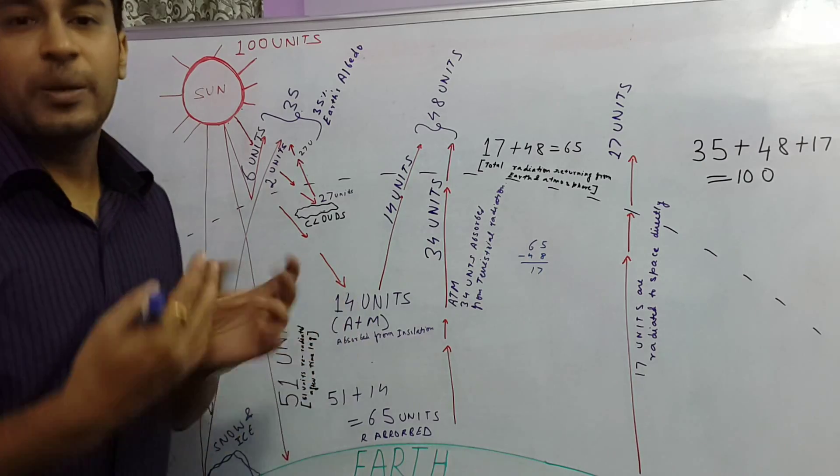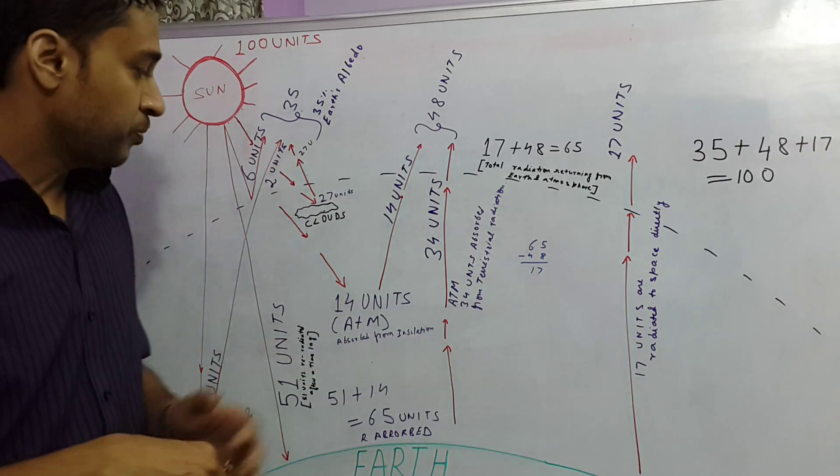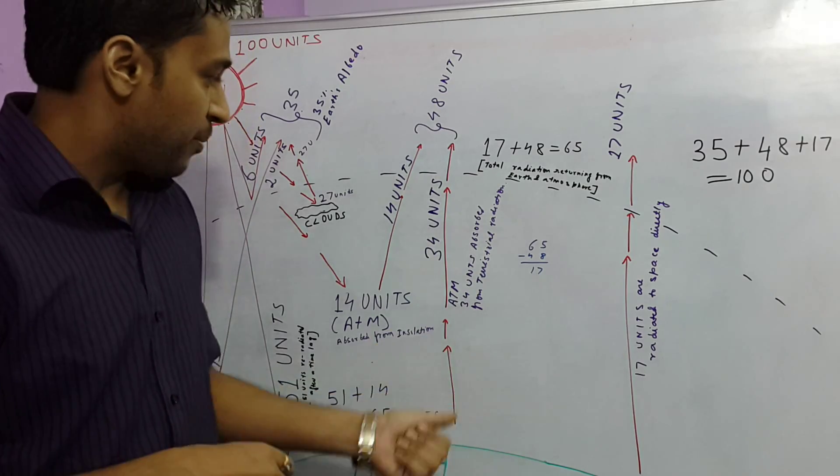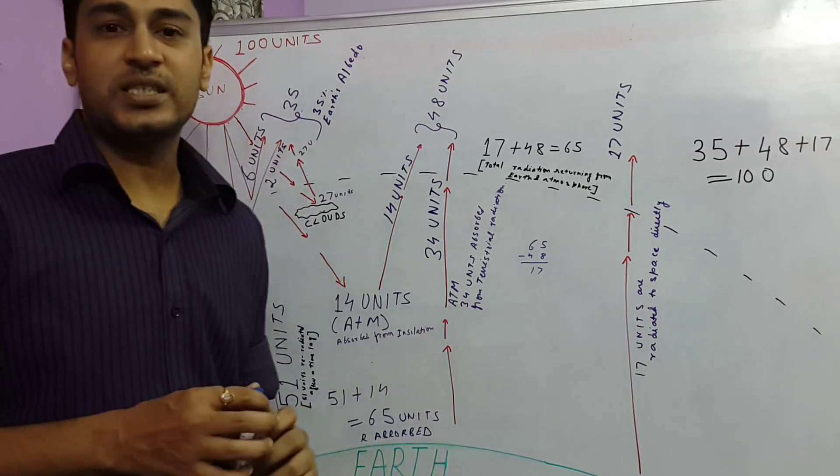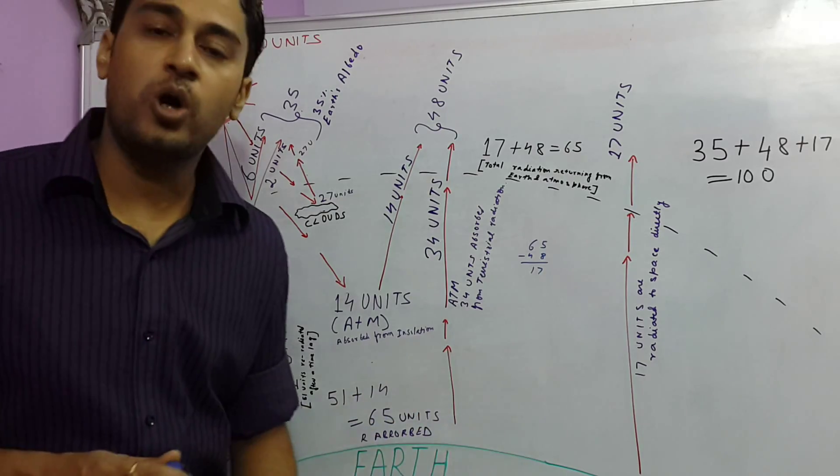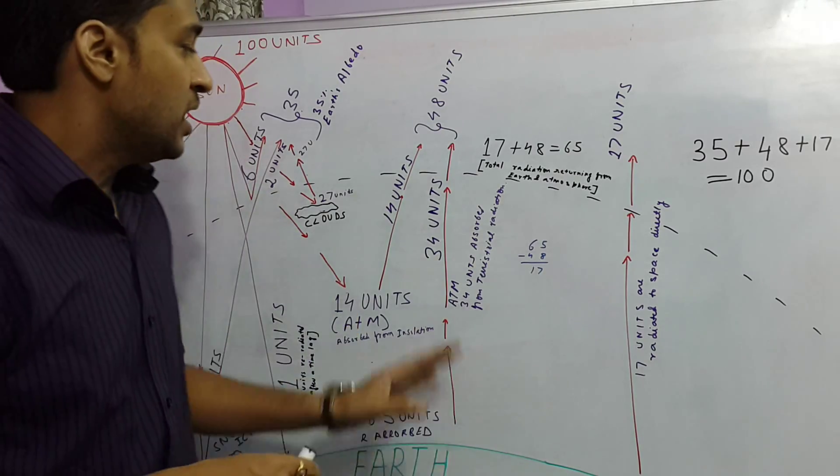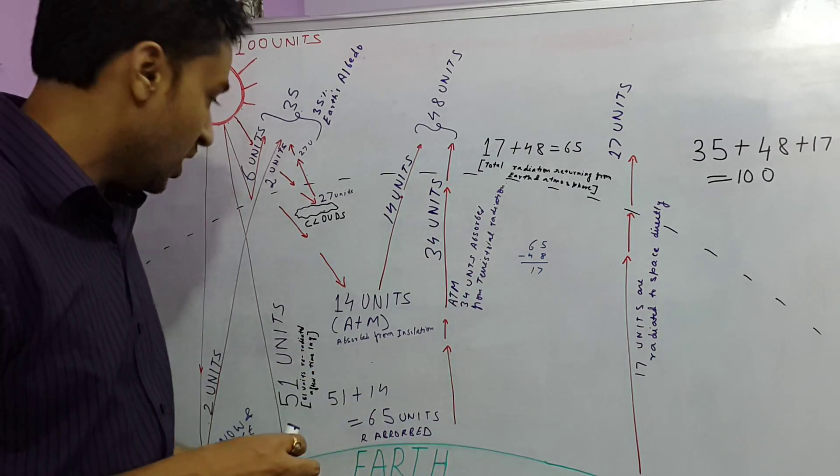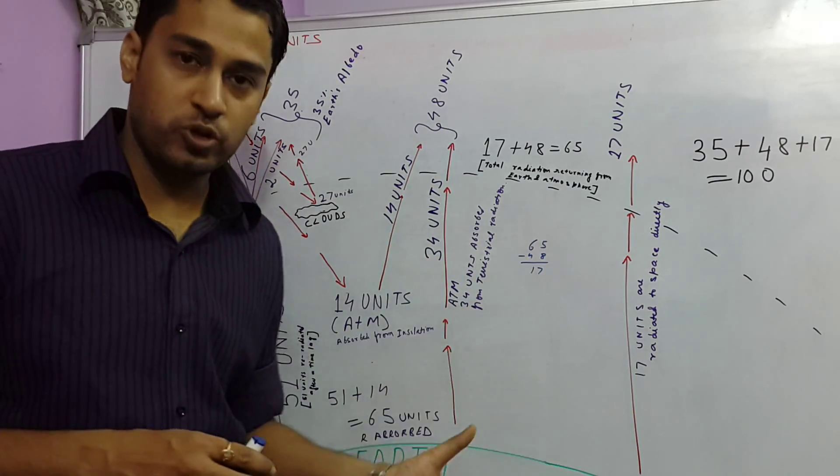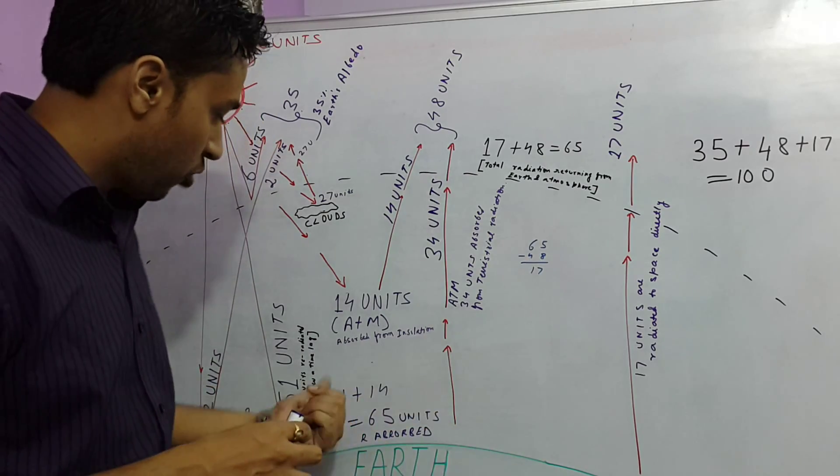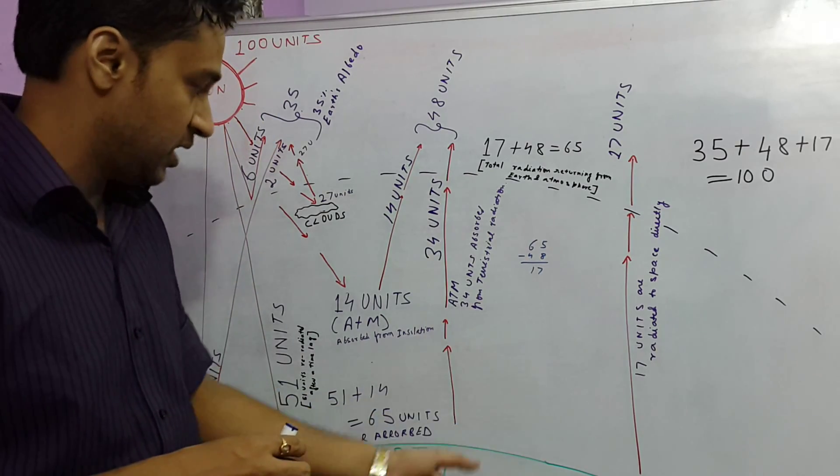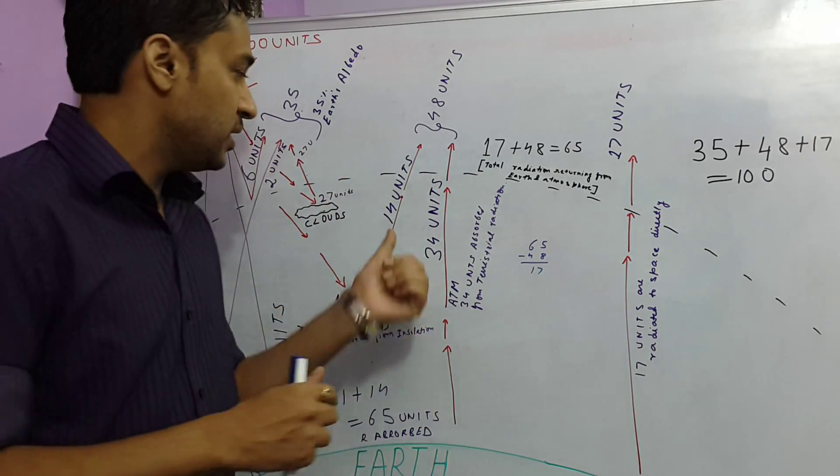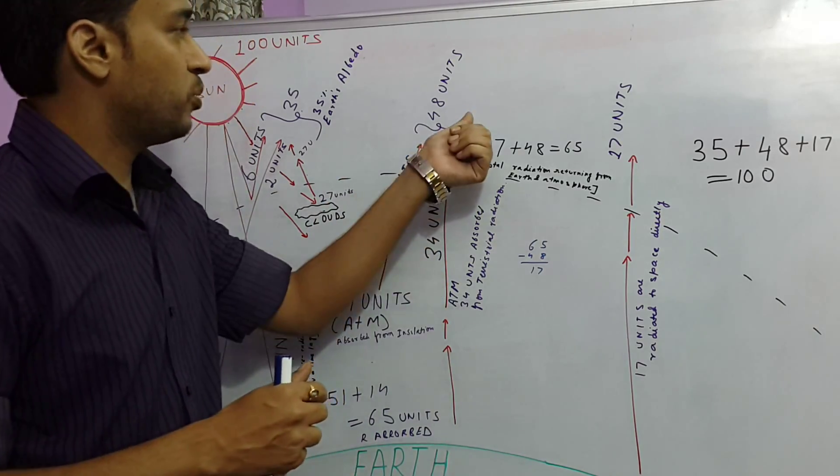And now what happens is the atmosphere basically gets heated up from the long wave terrestrial radiation. So about 34 units are absorbed by the atmosphere which are emitted from the 51 units that we had earlier seen. So now atmosphere's heat budget would be 14 plus 34 which is equal to 48.